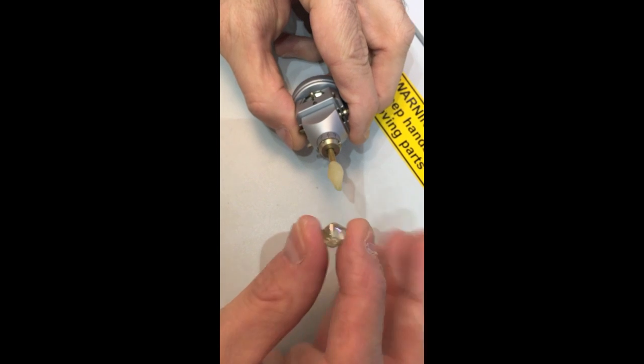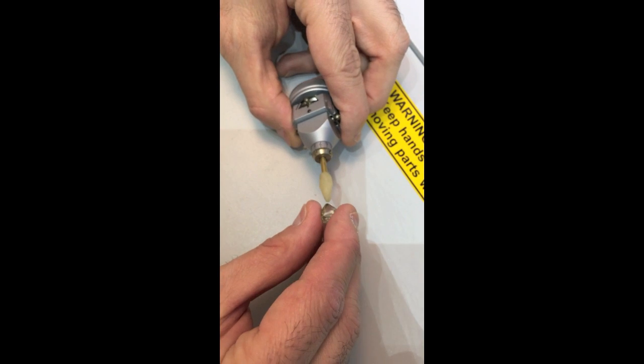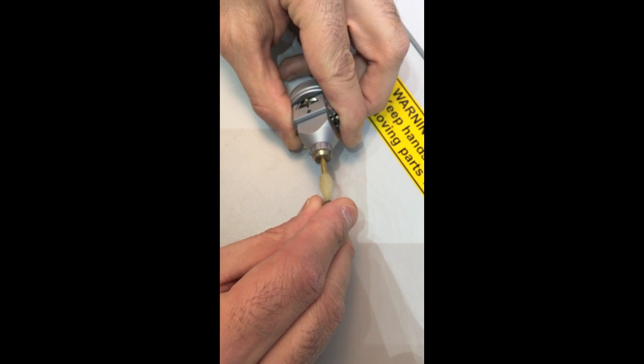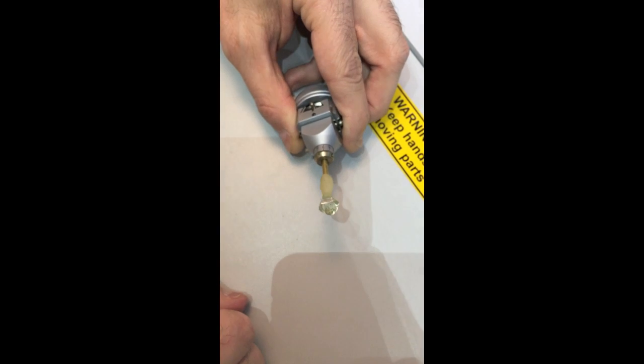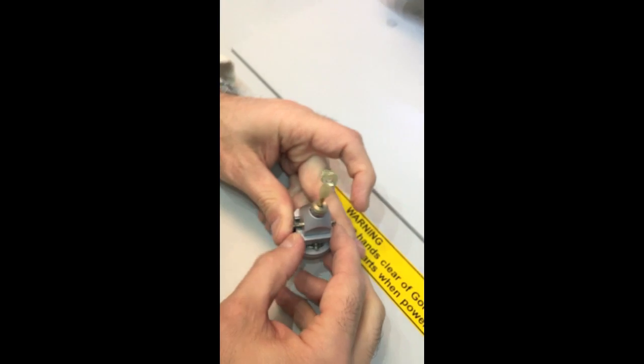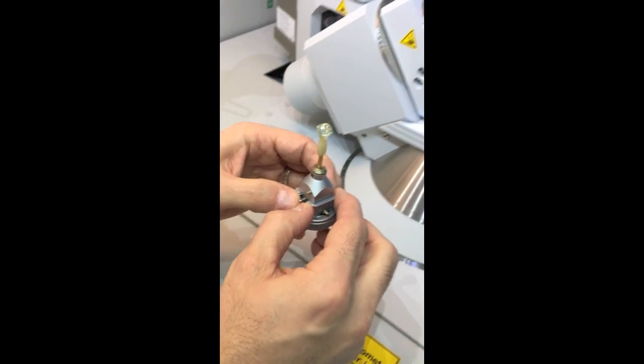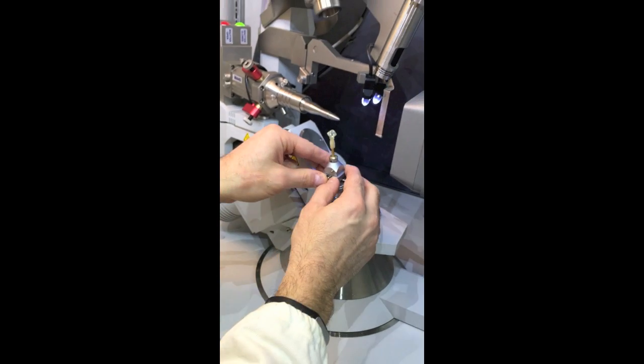So, I will show you now how we mount a diamond like this on a goniometer head. I have some wax here that fixes the diamond very well, you see. And now, I will mount this goniometer head on the single crystal X-ray diffractometer, like this.